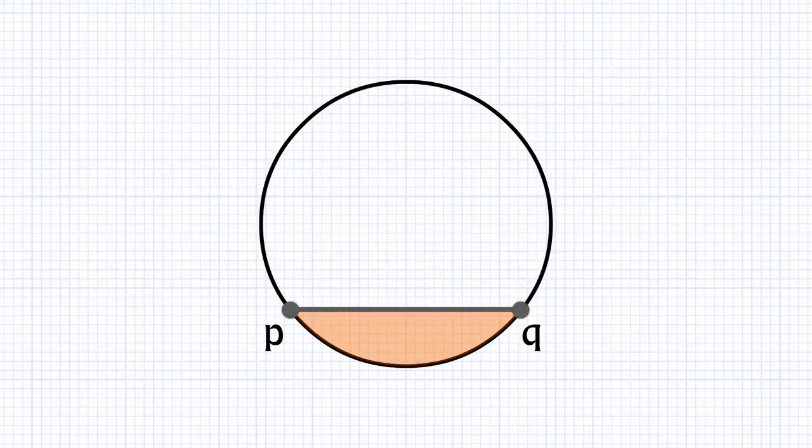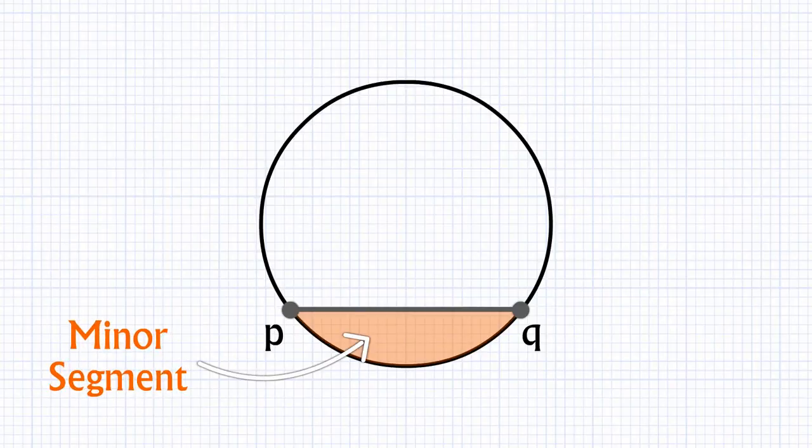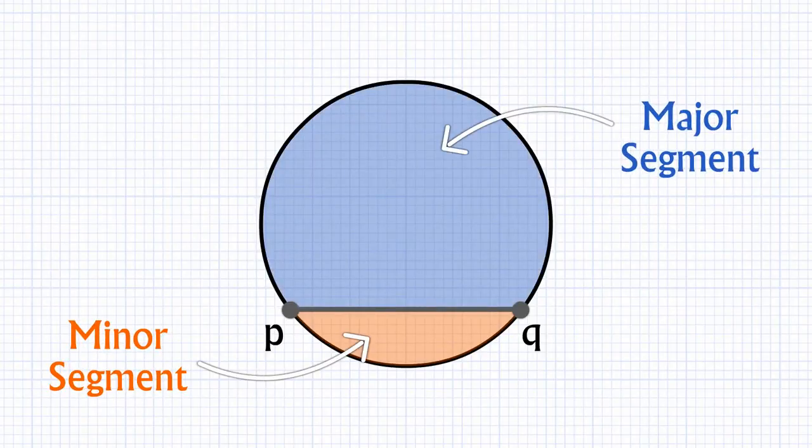Region between chord and arc is called segment. Here, we have a minor segment and this is the major segment.